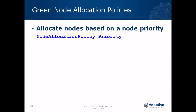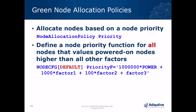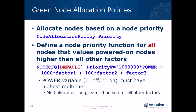You must configure the node allocation policy to choose powered-on nodes first. To do this, use a node allocation policy of priority and define a priority F function that uses the power variable. The power variable is zero for off and one for on. Use a very large multiplier — one million — times the power variable, plus whatever other factors you want. This multiplier must be greater than the sum of all other factors, otherwise you may get unintended node power-on and power-off behavior.